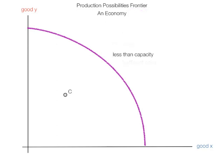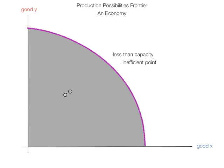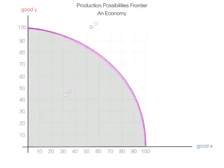At point C, the economy is less than capacity, and it's an inefficient point. In fact, anywhere in the gray area would be an underutilized economy — less than capacity. Point D is beyond capacity. The economy is not capable of producing at that level unless there's a technological change that shifts the entire production possibilities frontier out.